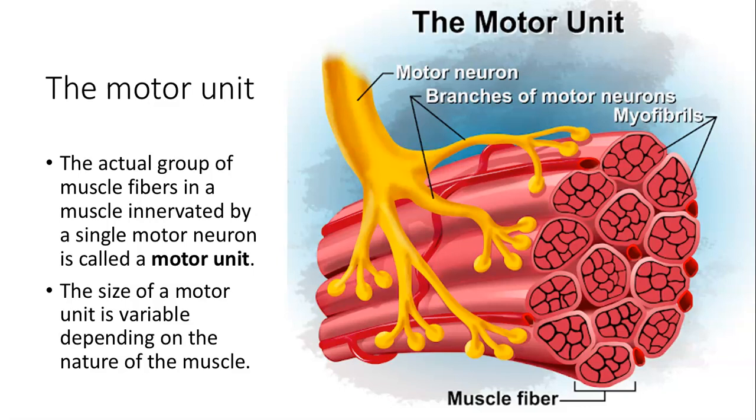As more strength is needed to do something, larger motor units with bigger, higher threshold motor neurons are enlisted to activate larger muscle fibers. This increasing activation of motor units produces an increase in muscle contraction, and we call that recruitment.